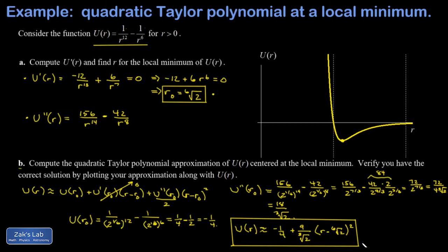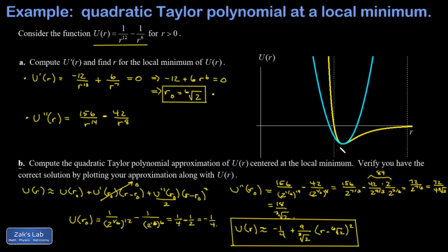That's our quadratic Taylor approximation centered at the local minimum. When we plot it, shown in teal, it is very well matched to the graph of u(r) when we're close to r₀ = 2^(1/6). A bracket indicates the range of values where this is a good approximation to the original function's curvature — beyond that range, the approximation diverges.